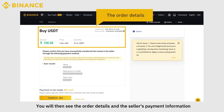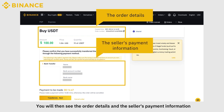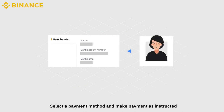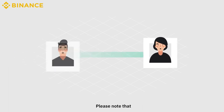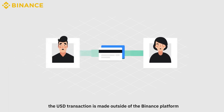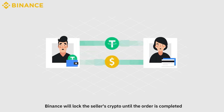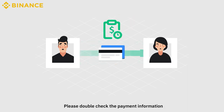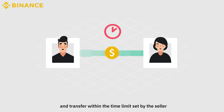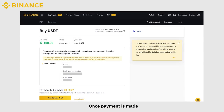You will then see the order details and the seller's payment information. Select a payment method and make payment as instructed. Please note that the USD transaction is made outside of the Binance platform between you and the seller. From the moment you place an order, Binance will lock the seller's crypto until the order is completed. Please double check the payment information and transfer within the time limit set by the seller.